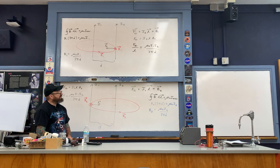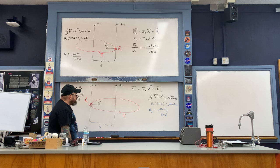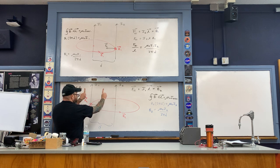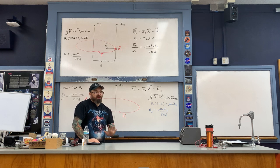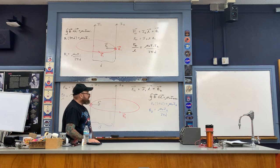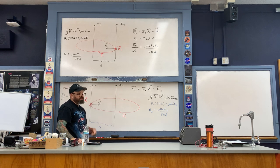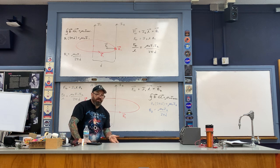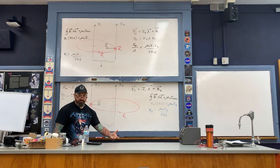The force per unit length on wire 1 due to wire 2 is exactly the same magnitude as on wire 2 due to wire 1, consistent with Newton's third law. When the two currents point in the same direction, the wires attract each other. A variant of this problem has anti-parallel currents, and in that case the wires repel each other.